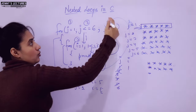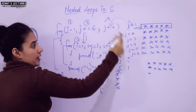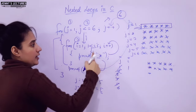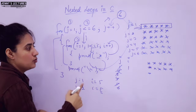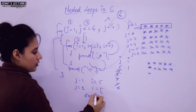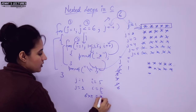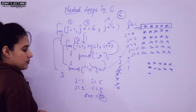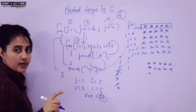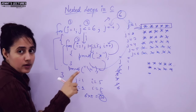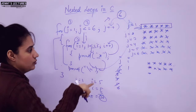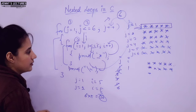The outer loop would be executed 6 times, and the inner loop would be executed 6 × 5 = 30 times. I hope you now understand the working of nesting of loops.